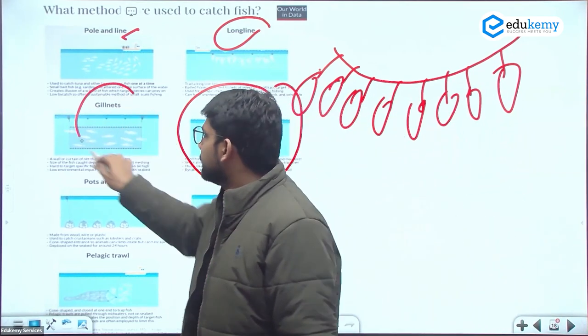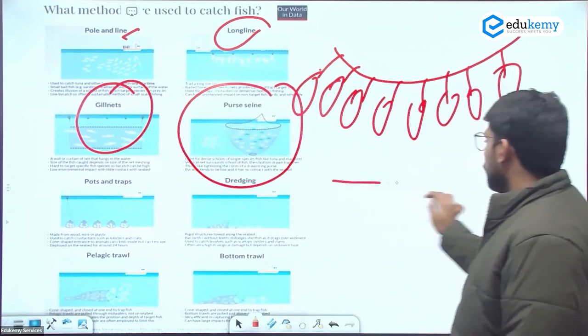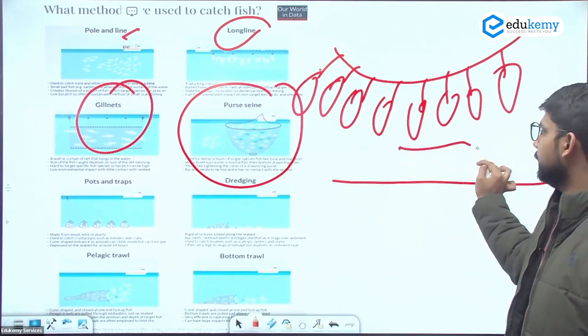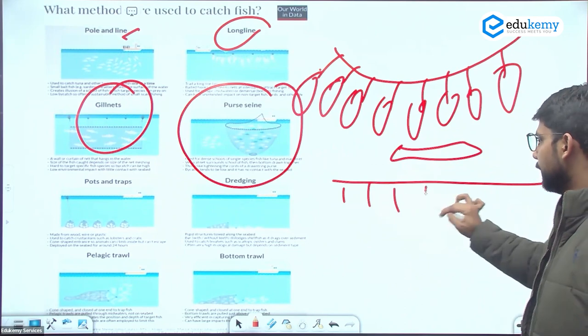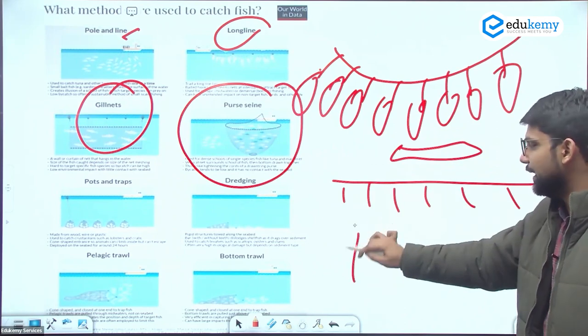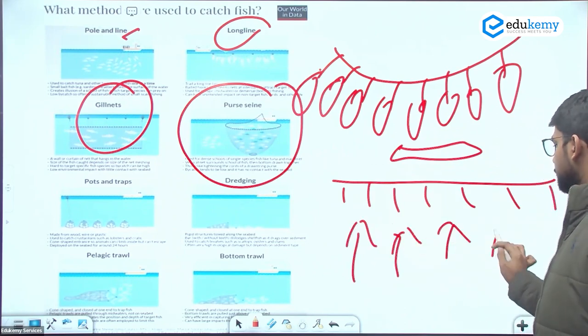Then gill nets - in gill nets we're making a wall in a specific area. If the ship is here, we're making a wall. If any fish come in this area, they will stick to the fish net.